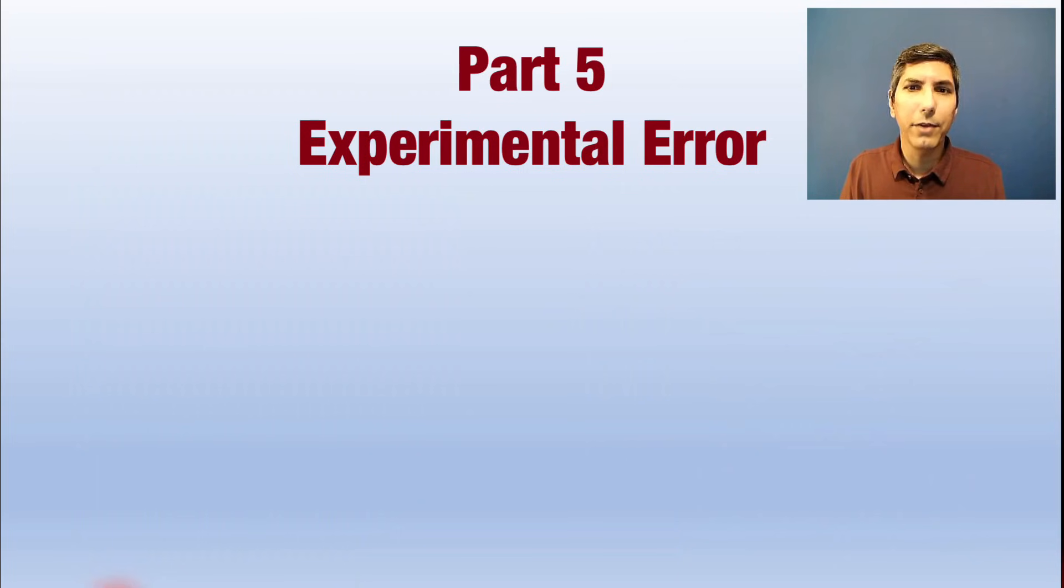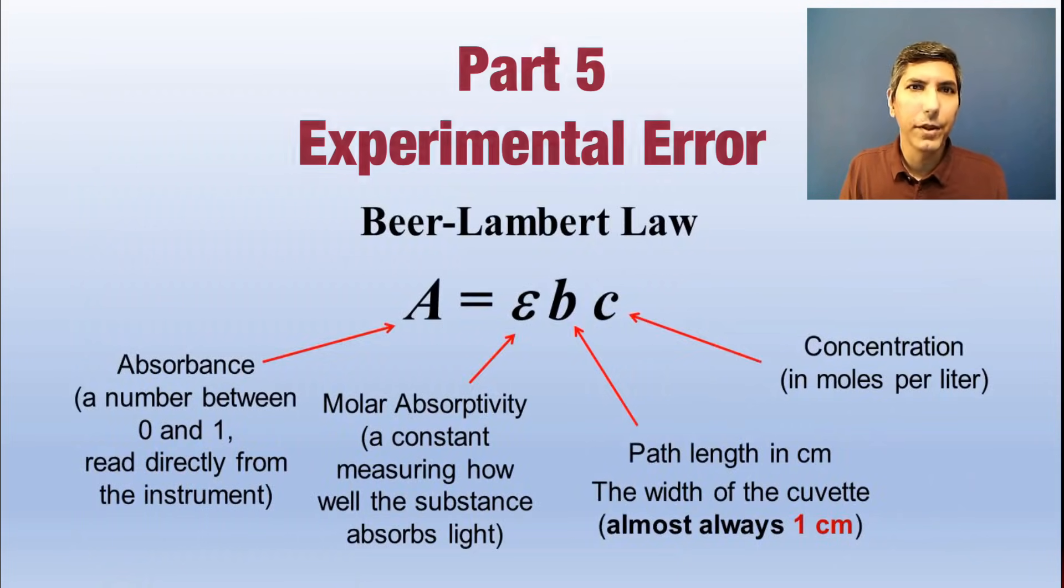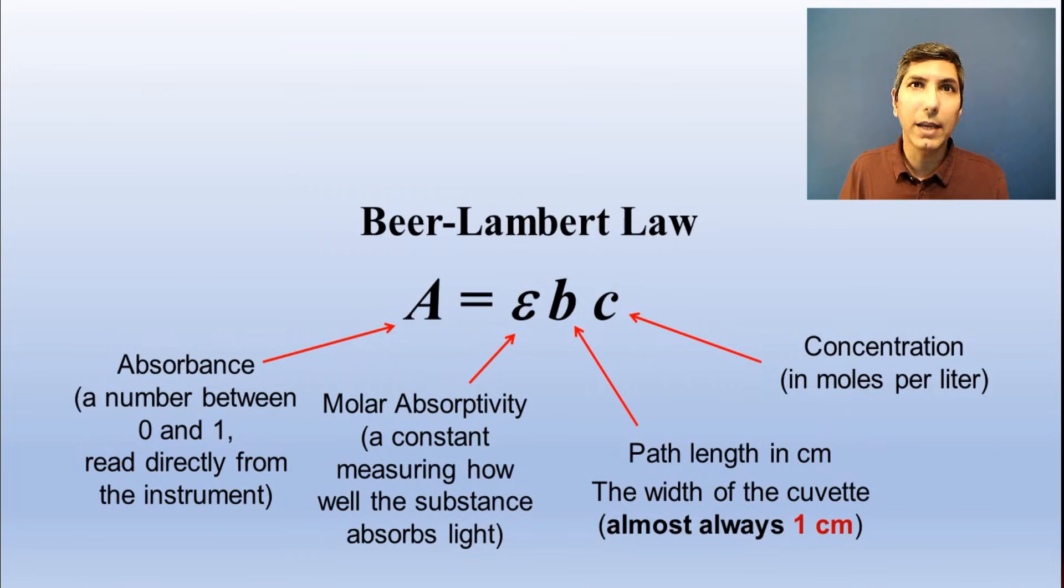You're expected to know the effect of errors in an experiment. Most of the time, simple algebra will be the key to figuring these out. For example, in spectrophotometry, we use the Beer-Lambert law, which is written A equals epsilon BC. If we contaminate the cuvette with water, just as an example, that means the actual concentration, the C, is lower than it should be. Since C, concentration is too low, that means A, absorbance, is also going to be too low. And we can see that just by looking at the equation.